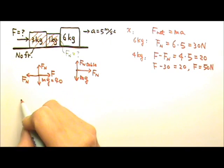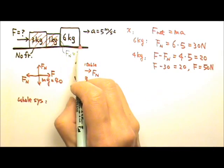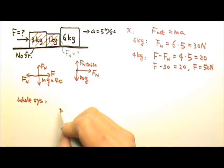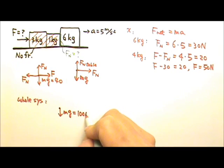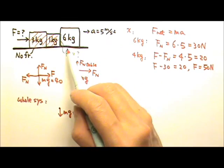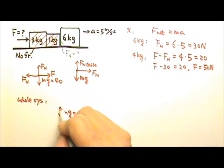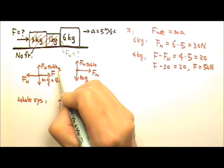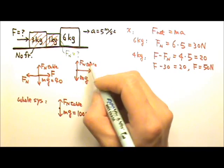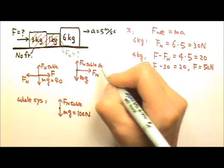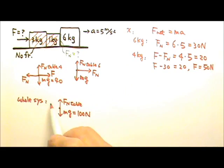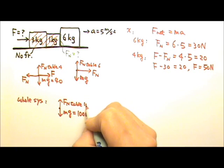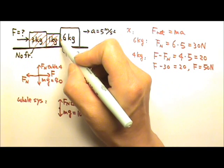What if you chose to do the whole system? If you wrote the force equation for the whole system, the total Mg would be 100 newtons, the total mass is 10 kilograms, and the only horizontal force is the pushing force F. In the x direction: F equals 10 kilograms times 5, so F equals 50 newtons. However, the normal force between the blocks is an internal force — when you treat everything as a black box, you cannot find internal forces. To find the internal normal force, you must choose separate subsystems.